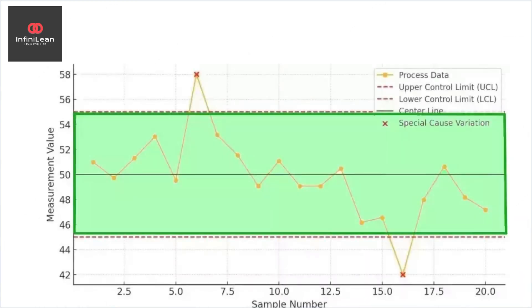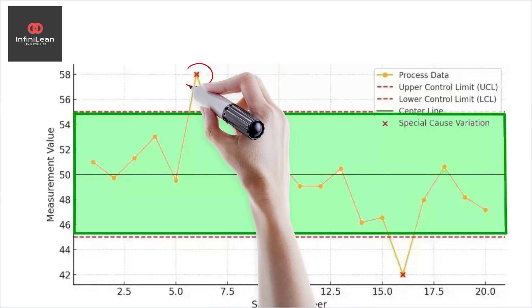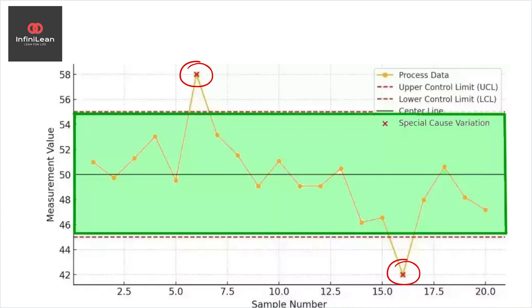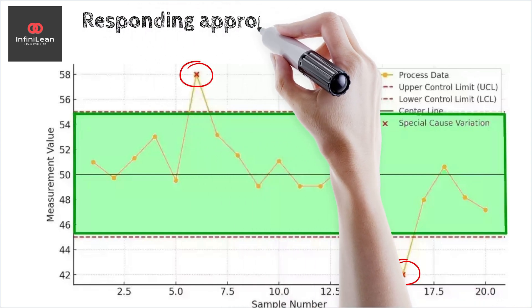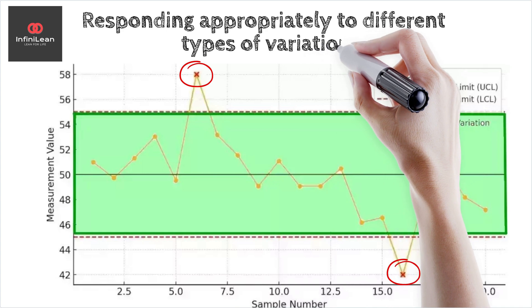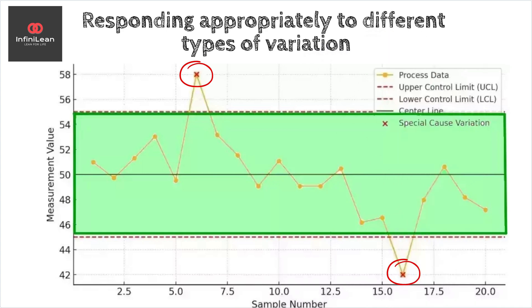However, if points are outside these limits or show specific patterns, you might be dealing with special cause variation. Remember, a key principle in Six Sigma is to understand the voice of the process and respond appropriately. Recognizing common cause variation allows you to improve processes without chasing after minor deviations.